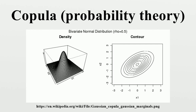similar but unrelated to grammatical copulas in linguistics. Sklar's theorem states that any multivariate joint distribution can be written in terms of univariate marginal distribution functions and a copula, which describes the dependence structure between the variables.